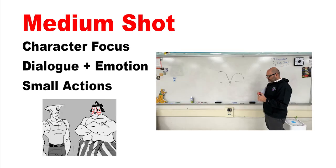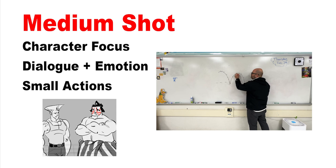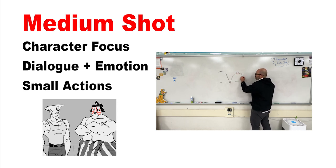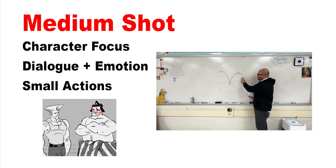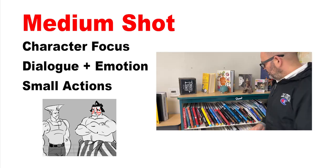The medium shot is great for talking, emotions, and smaller actions. There's a little bit of background to orient the audience, but the emphasis is on the character and their dialogue. Use this for facial expressions and just general back and forth talking.